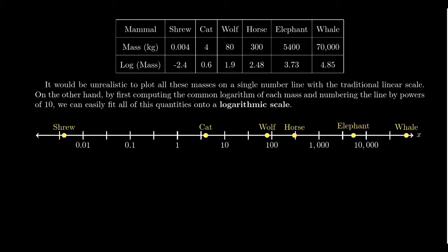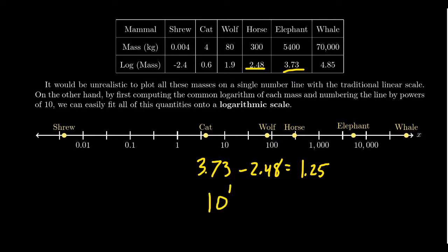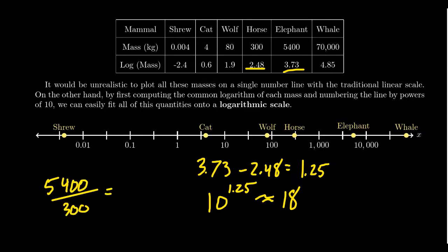Note that on the number line, the horse has a log value of 2.48 and the elephant is 3.73. If you take the difference — 3.73 minus 2.48 — you get 1.25. That tells us the elephant is 10 to the 1.25 times larger than the horse, which if you plug that into the calculator you get about 18. And if you take 5,400 divided by 300, you get exactly 18 — so we were doing pretty well.